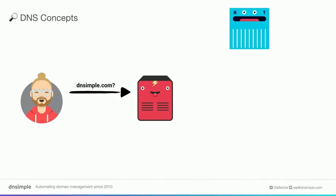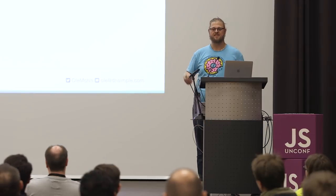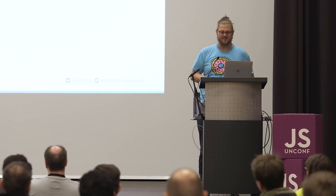So the first thing we need is the root server. There's obviously not one super cute root server, but a few — we'll talk about this too. The root server knows all the different TLDs that exist, like com, net, org, jobs, works, Vanguard — all of these are TLDs.